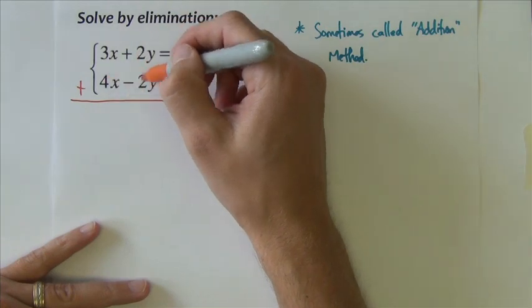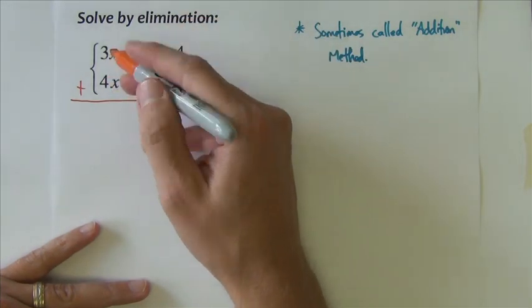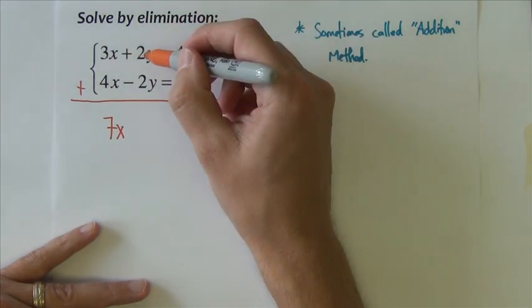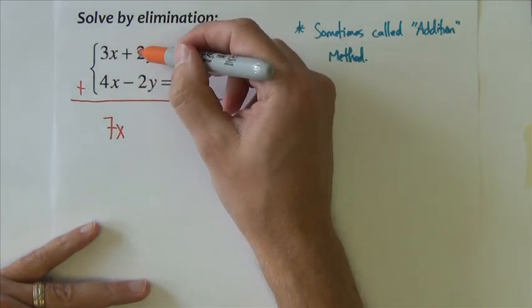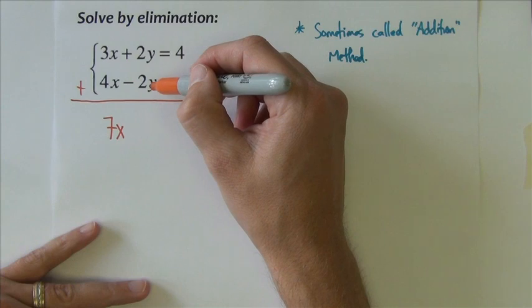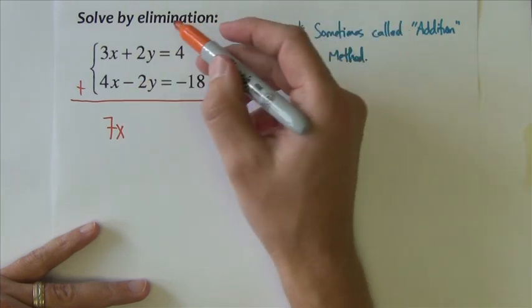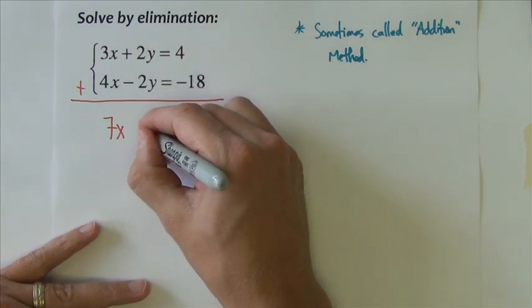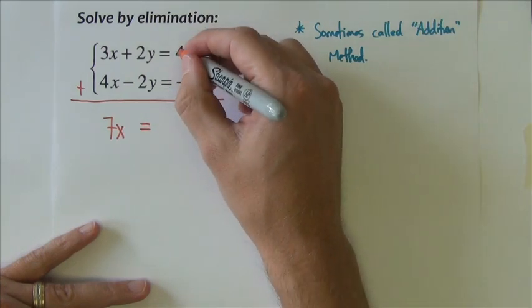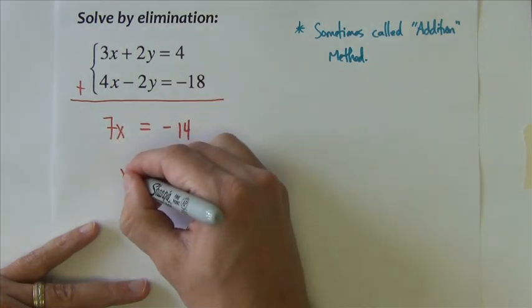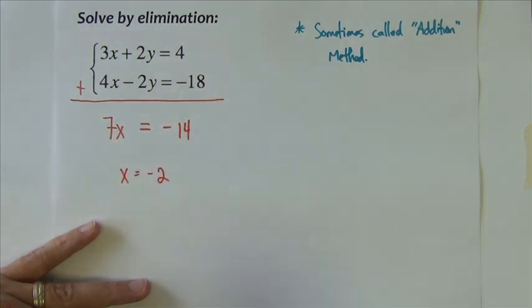If I add them together here, 3x plus 4x—we're just going to add straight down so we hit all the like terms—3x plus 4x is 7x. Notice what happens to the y's: positive 2y and negative 2y add to 0. They eliminate, hence the name elimination. So the y's add out of the problem. We add this and we get negative 14 divided by 7. We get x equals negative 2.